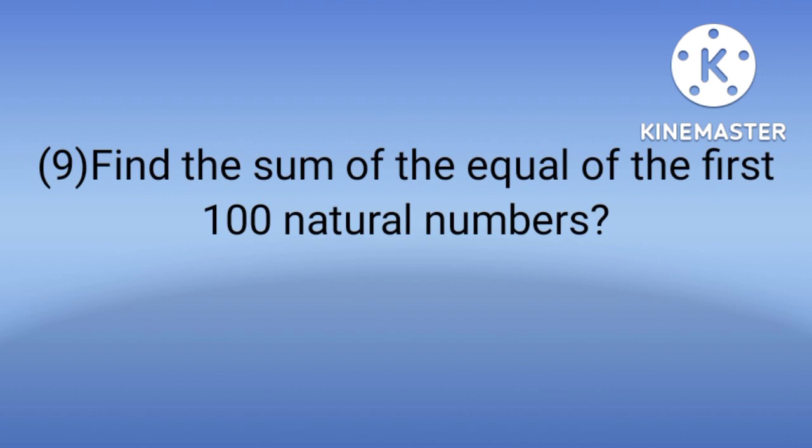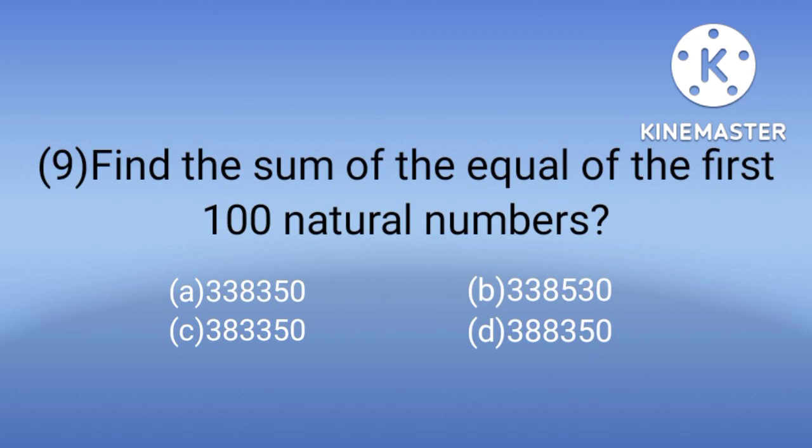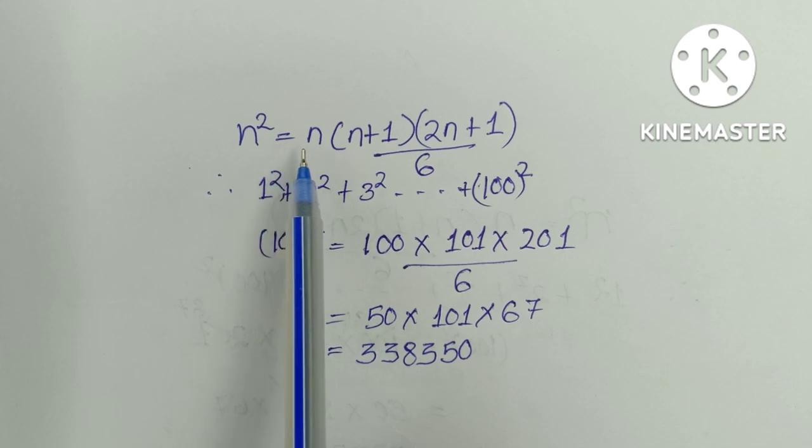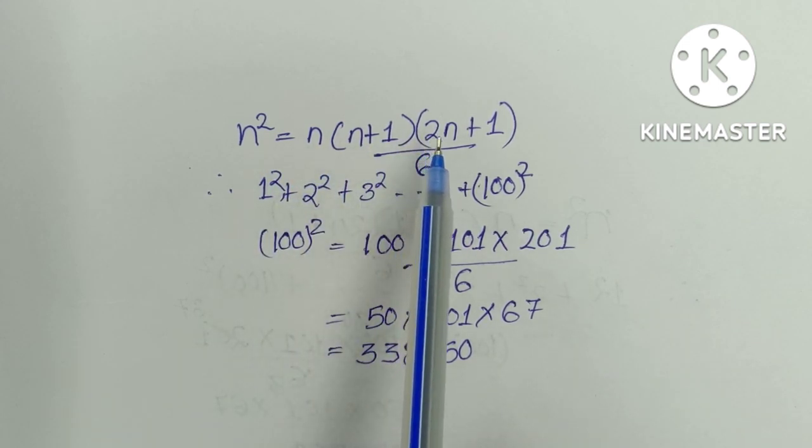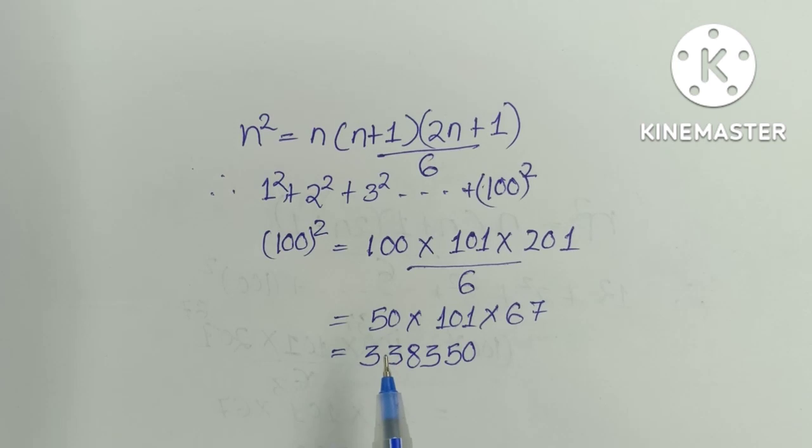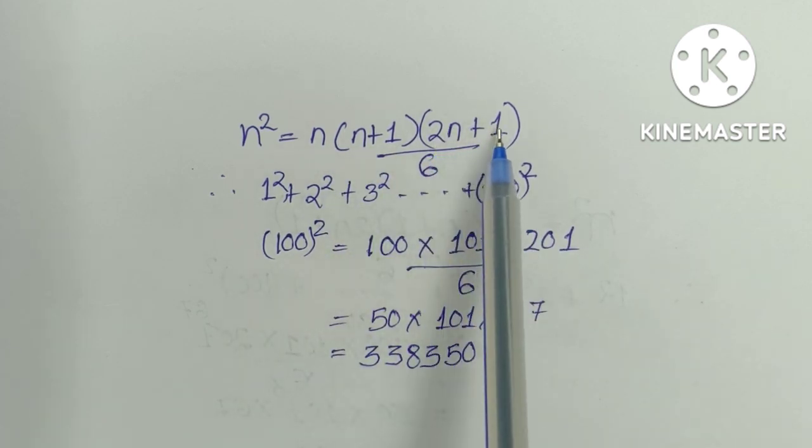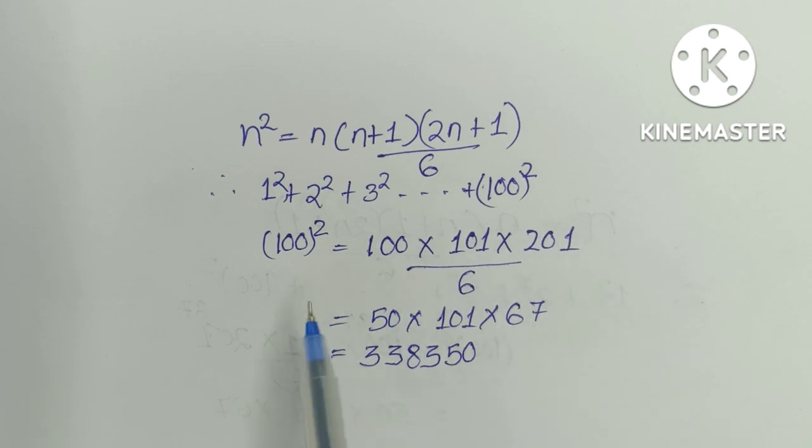Number 9: Find the sum of squares of the first hundred natural numbers. These are the options. Let me calculate the answer. To find sum of squares, here is the formula: N square equals N into N plus 1 into 2N plus 1 by 6. We need to find the sum of squares of 100 natural numbers. So 100 square equals 100 into 101 into 201.